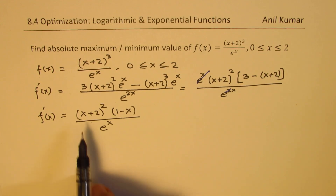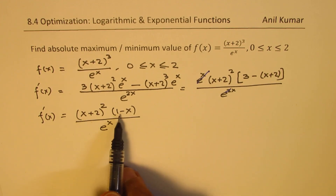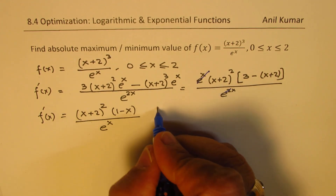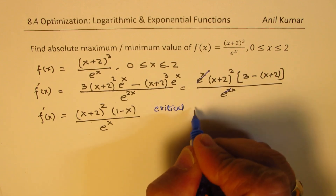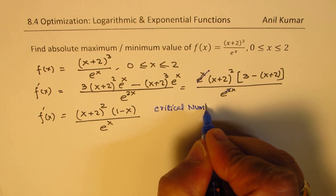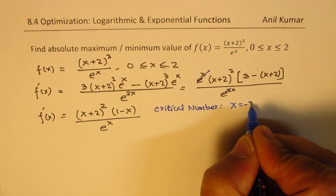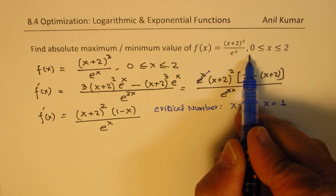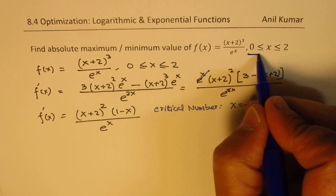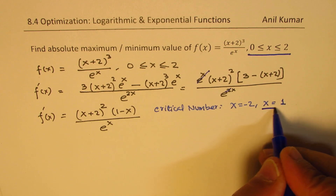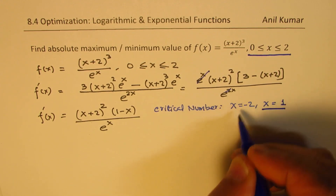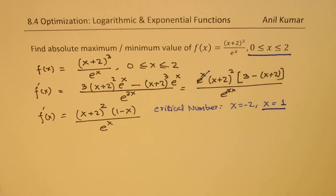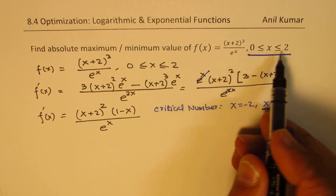From the derivative, we get critical points at x = −2 and x = 1. In the given interval [0, 2], only x = 1 is relevant — x = −2 is external to our interval. So we'll use the points x = 0, x = 1, and x = 2.